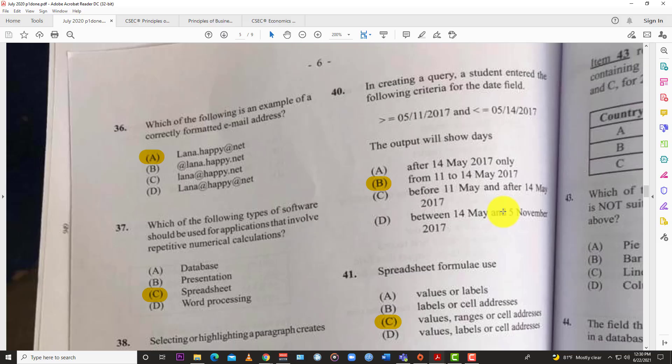Question 40: In creating a query, a student entered the following criteria for the date field. The output will show dates B, from the 11th to the 14th May 2017. You have the greater than or equal to with the date, and then you have and less than or equal to with the other date. So that makes sense because it's between equal to 11 or greater, but less than the 14th. That's how we get the answer.